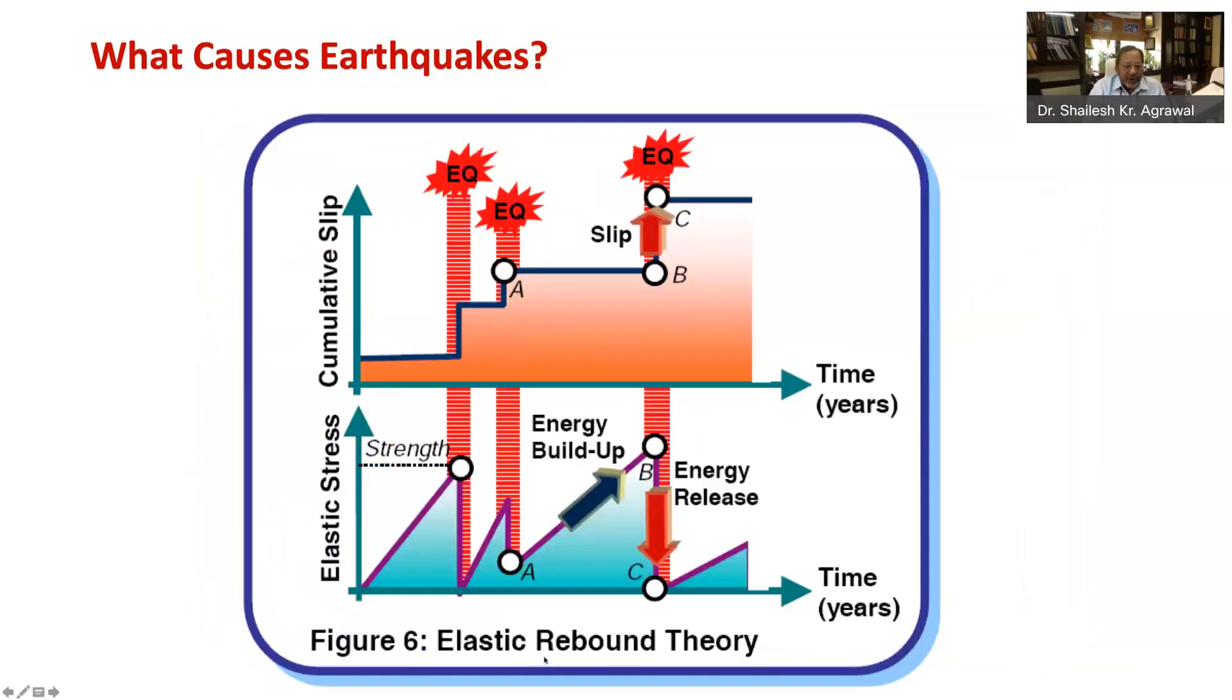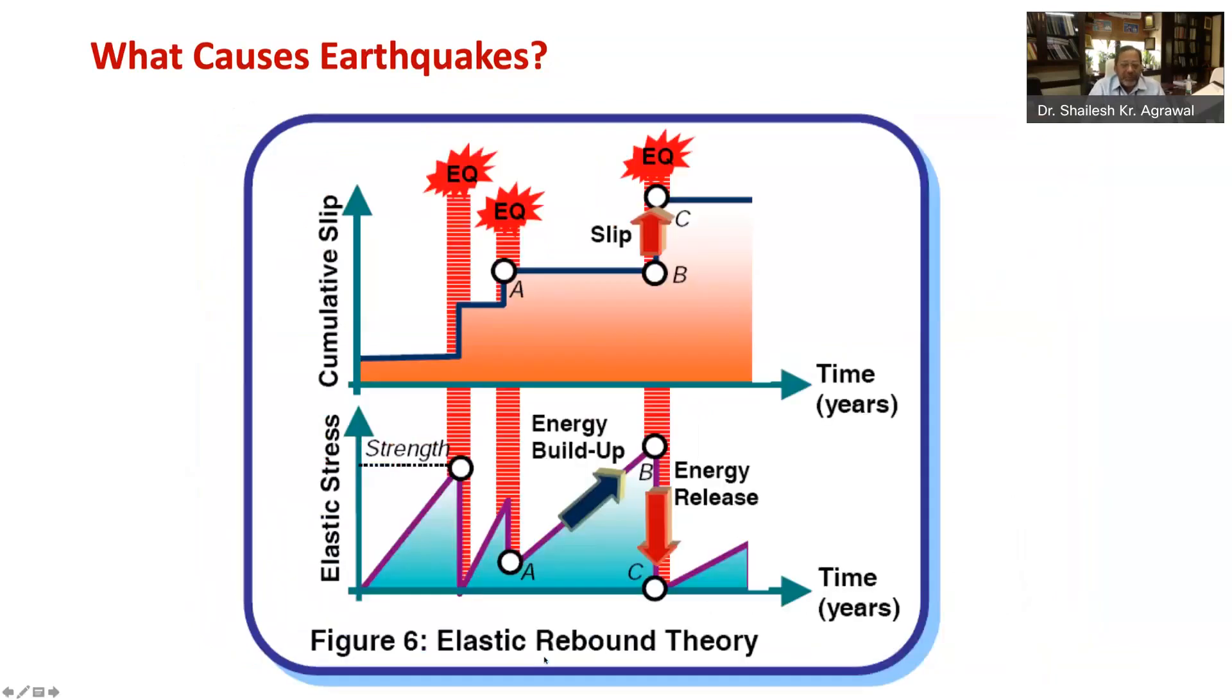After the earthquake is over, the process of strain buildup at this modified interface between the rocks starts all over again. This is called elastic rebound theory, which is attributed to earthquake generation. As you can see in this figure, elastic energy builds up, releases at the weaker section through sudden slip at the fault. The fault is the crack in the tectonic plate or rock and then again, buildup starts taking place and then again it gets released through a sudden slip at the fault.